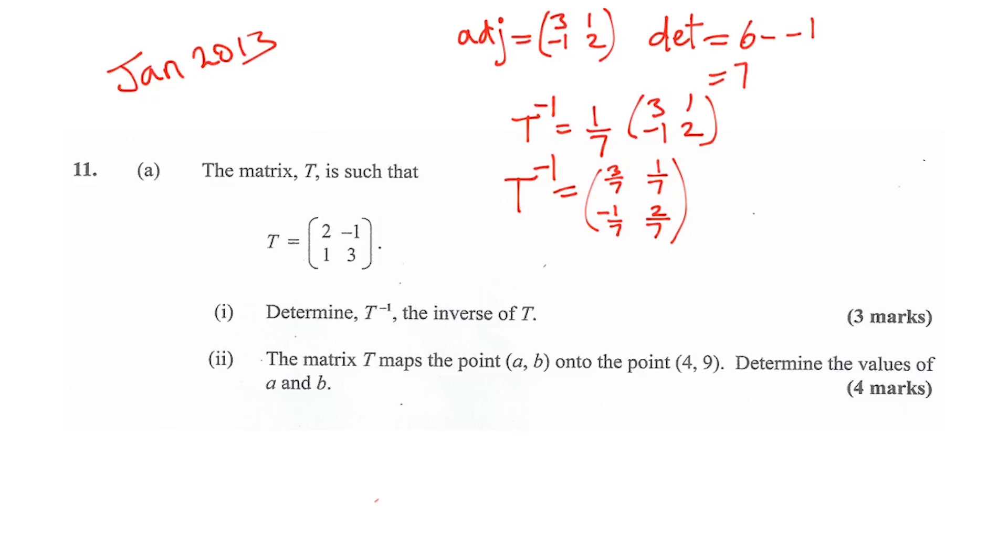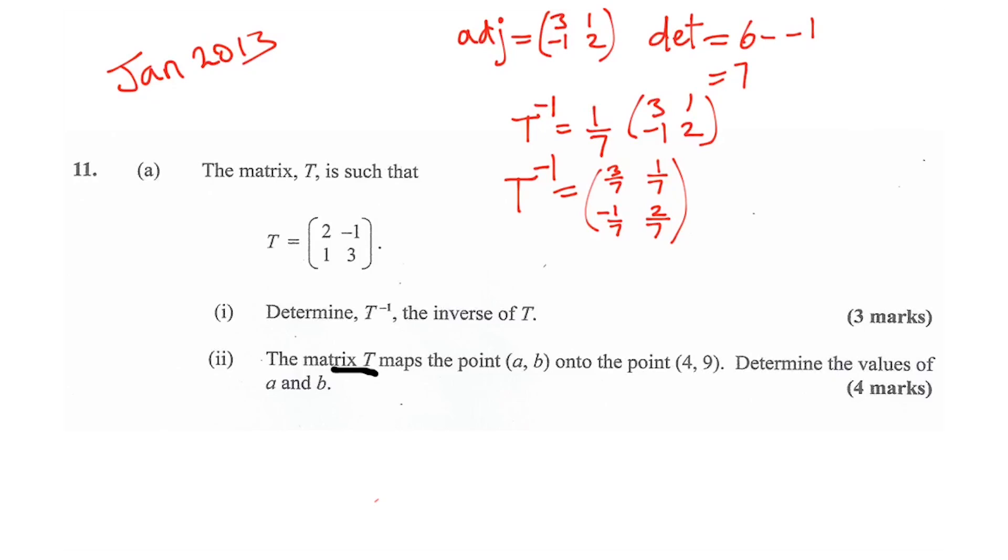So you collect your 3 marks for finding the inverse and go on to the part of the question that we're really interested in. The matrix T maps the point A, B onto the point 4, 9. Determine the values of A and B.